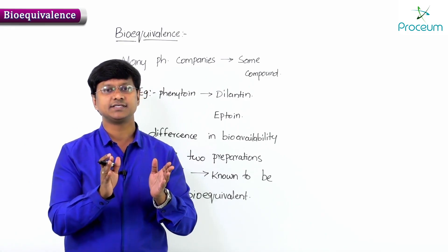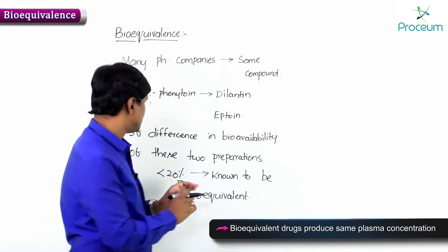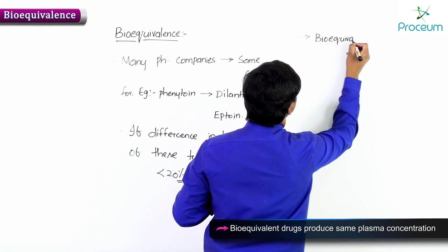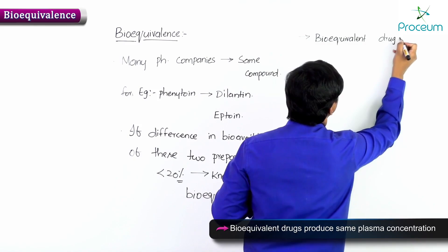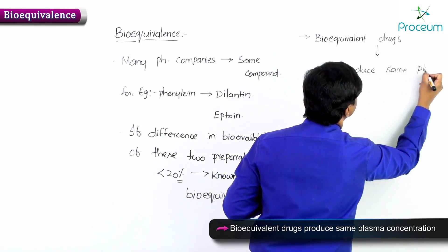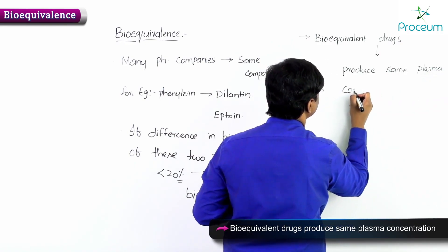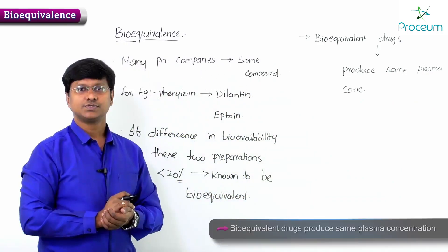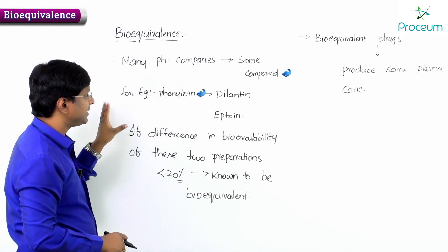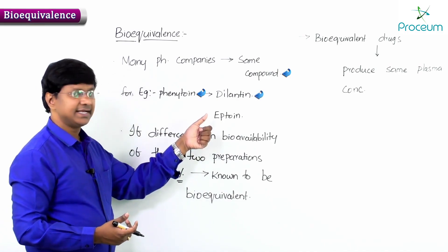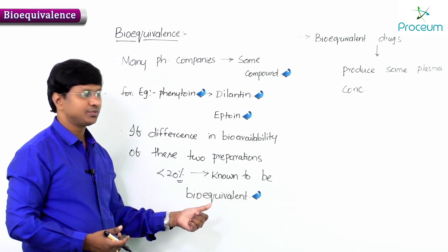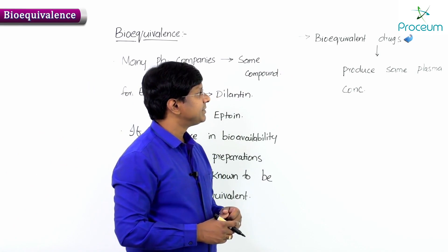As the term implies, these are biologically equal — they will produce similar plasma concentration. Bioequivalent drugs produce the same plasma concentration. To summarize: many pharmaceutical companies produce the same compound; for example, phenytoin is formulated as dilanthin by one company and eptoin by another. If the difference in bioavailability of these two preparations is less than twenty percent, they are bioequivalent, and they produce the same plasma concentration.